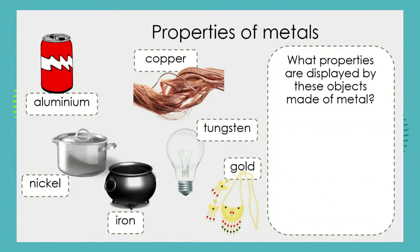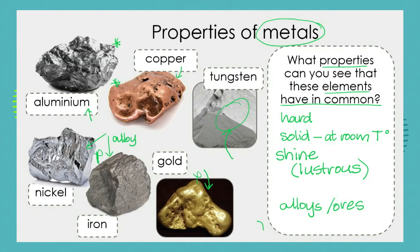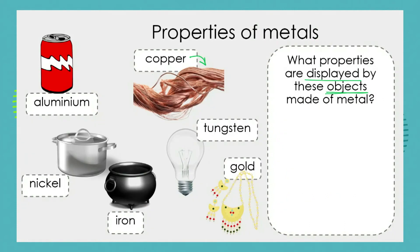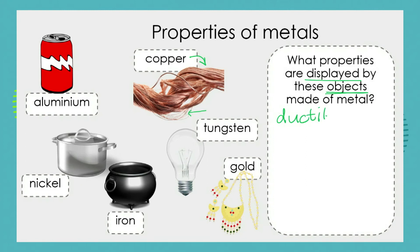Here are some everyday items made out of those metals. What properties are displayed by these objects that tell us something about the metal itself? We know that copper — although it exists as a copper nugget we could dig out of the ground — can be processed and pulled into very very thin wires. Do you remember what the property is where we can pull a metal into long thin wires?